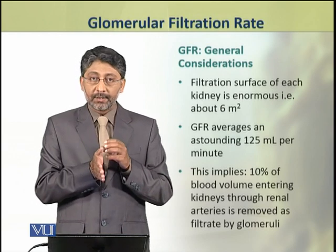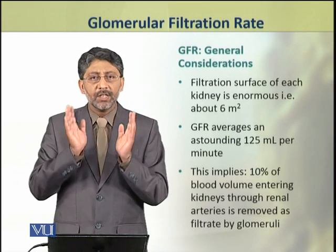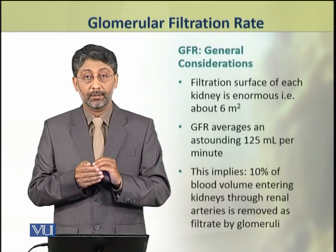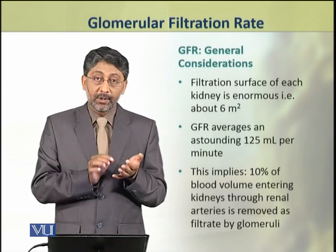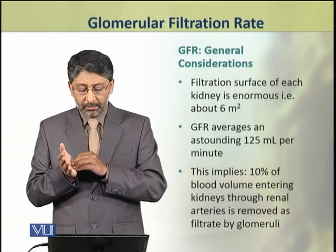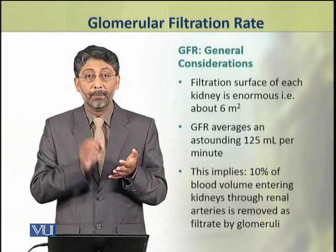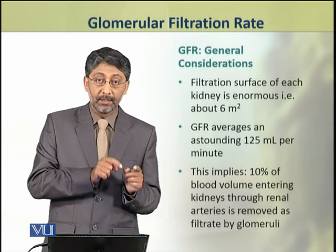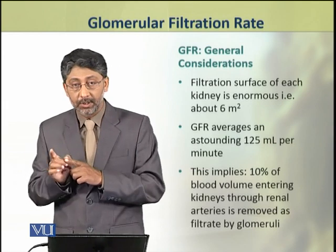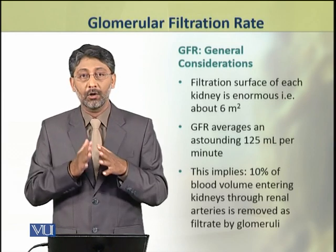First we shall discuss some general features of glomerular filtration rate. The filtration surface of each kidney is enormous — about 6 square meters. Through this surface, filtration by each kidney is about 125 milliliters per minute. This means that about 10% of the blood volume that enters each kidney through the renal arteries is removed as filtrate by the glomeruli.